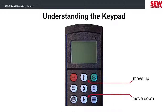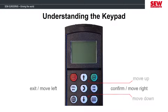Once you've chosen a function, the up and down arrows allow you to cycle through the different options. The left or right arrows either delete the selection or confirm it, or you can exit or enter the menu options with these keys as well.